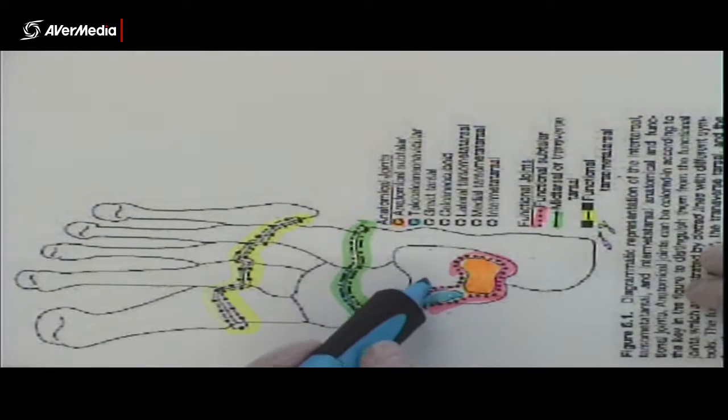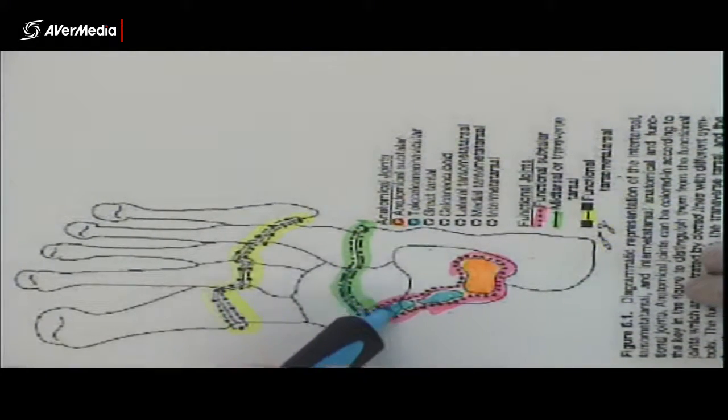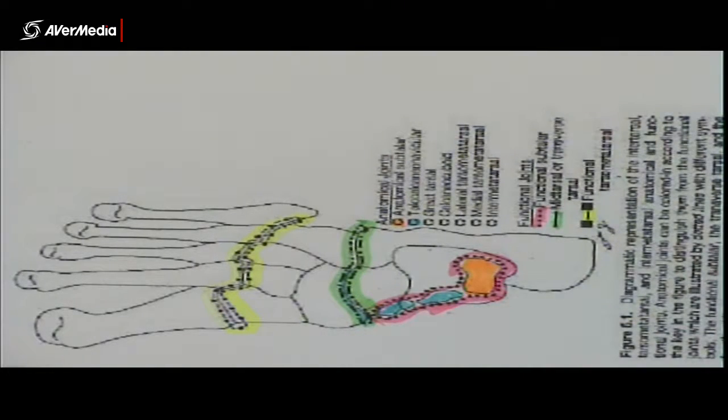So it's one anatomical joint. So there's one joint capsule around all of that, one anatomical joint, but it makes up half of two different functional joints.